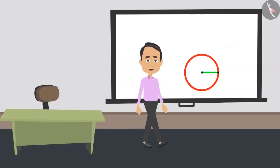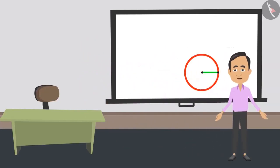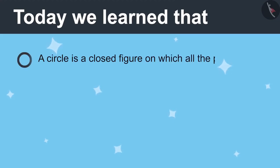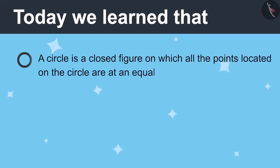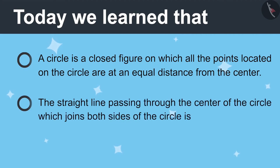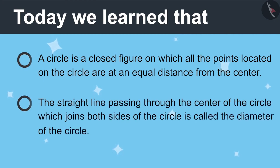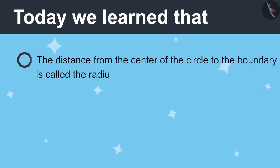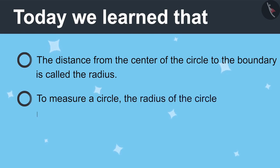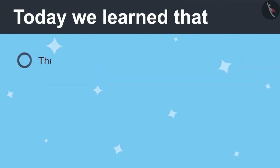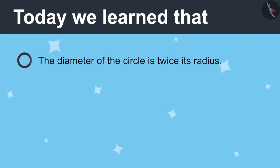Now we understand how to measure a circle. Today we learned: a circle is a closed figure in which all points are at the same distance from the center. The straight line passing through the center which meets both sides is called the diameter. The distance from the center to the boundary is the radius. Radius is half the diameter, and the diameter is twice the radius.